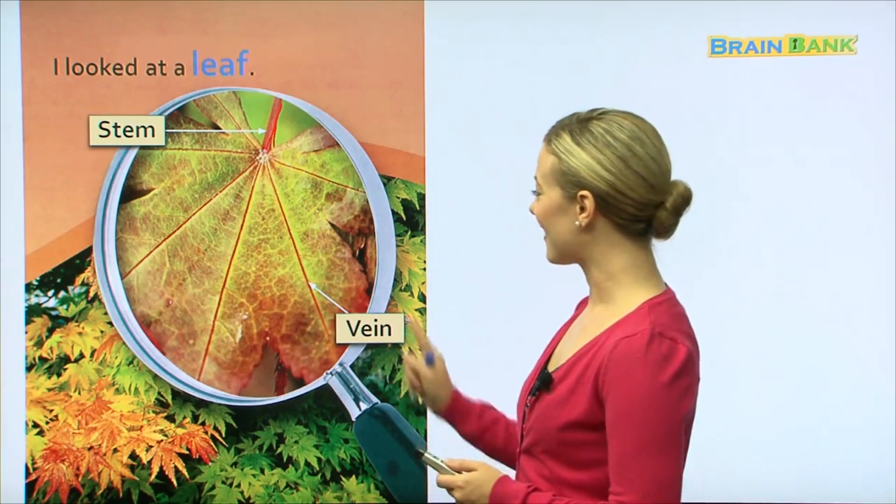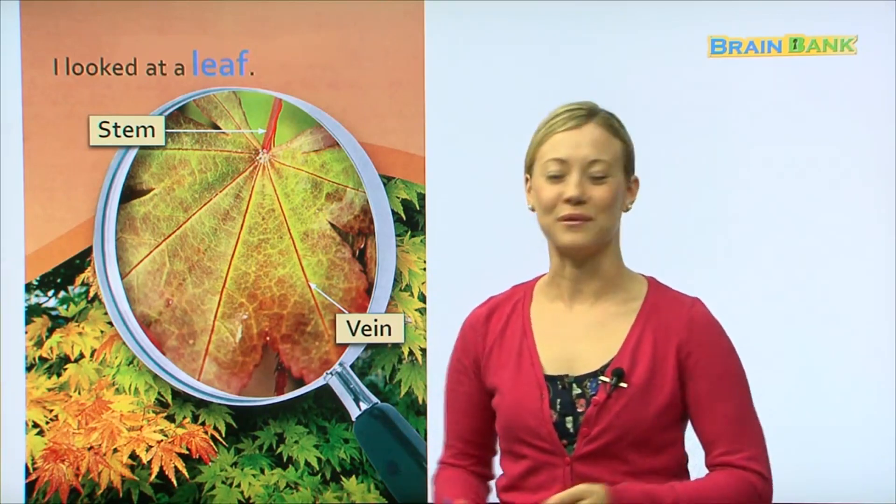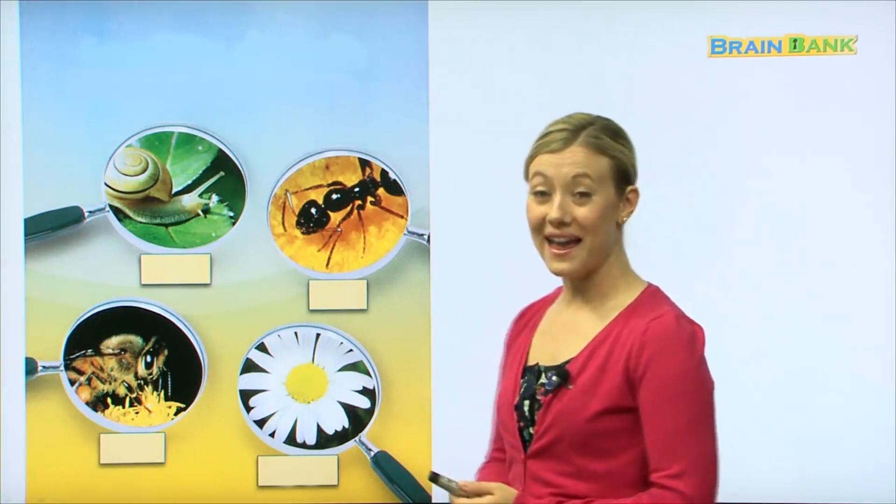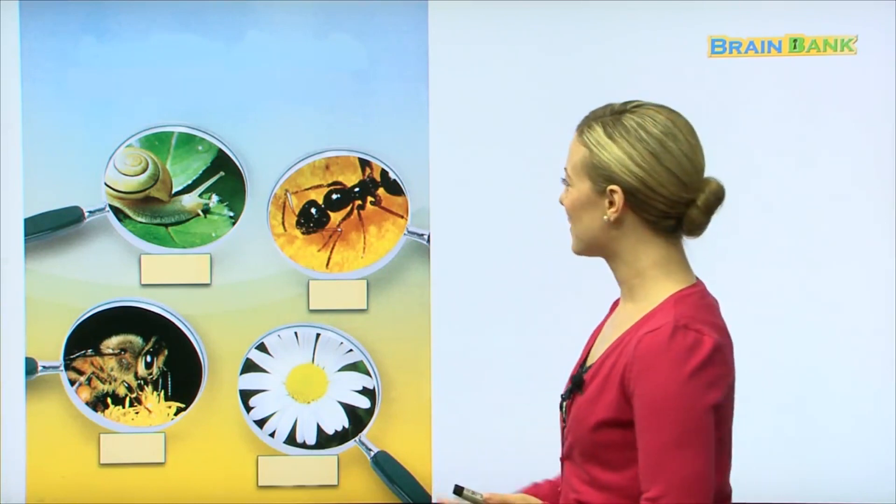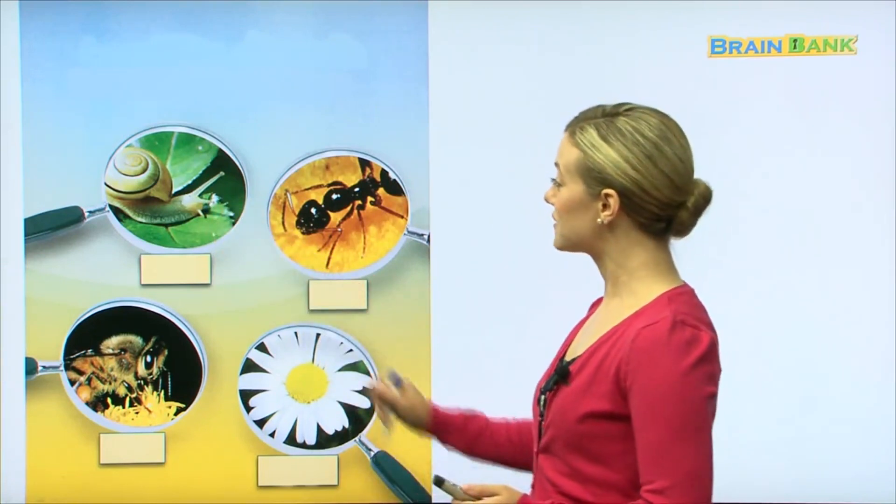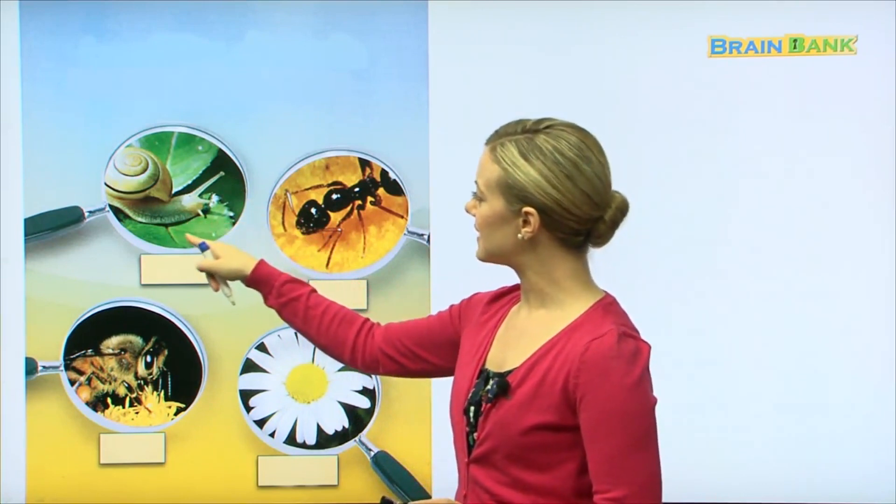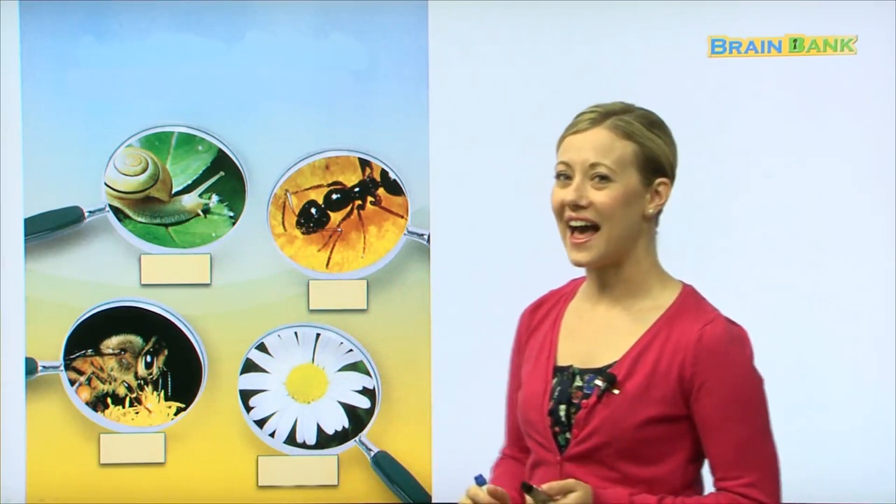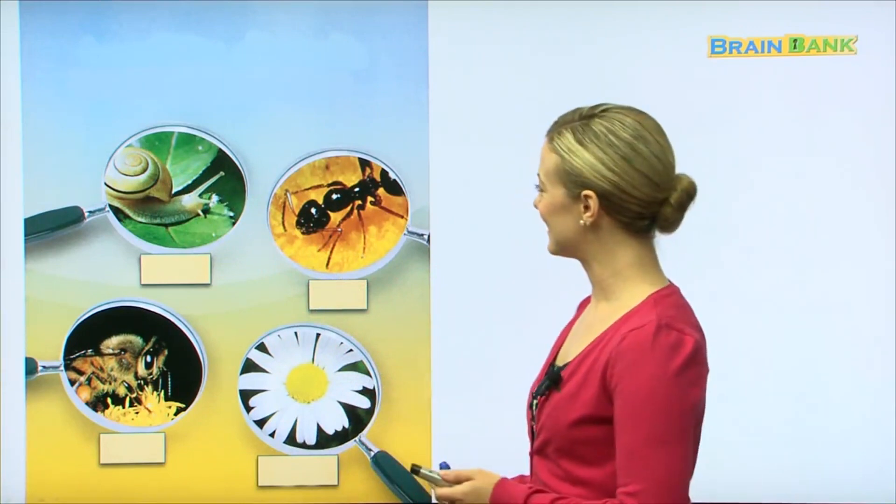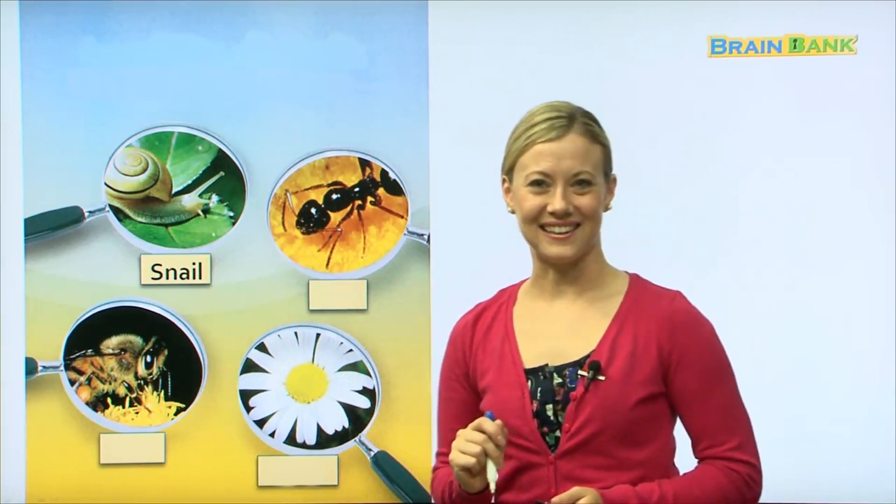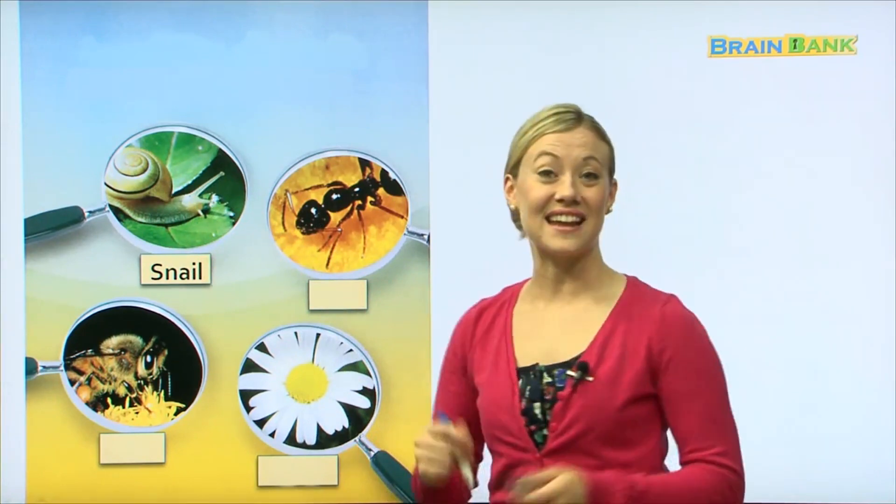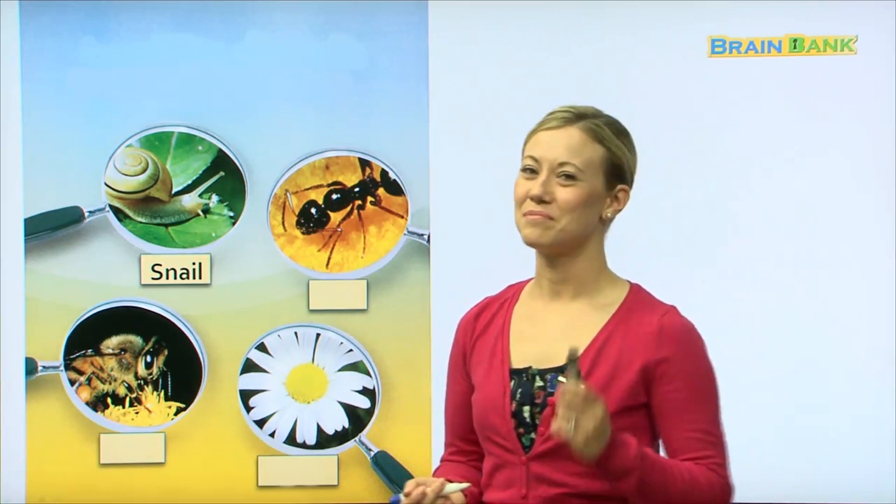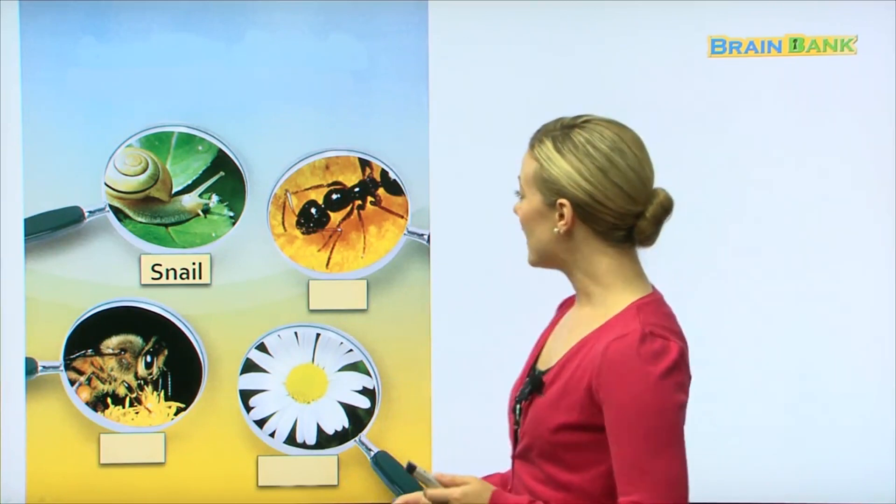Here we have four more things that we can see with a magnifying glass. So let's see if we know what they are. Okay, so what do we have here? It looks like an insect that's sitting on a leaf with a shell on its back. What animal is that, or what insect is that? A snail. Very good. Can we all say snail? Snail, snail, excellent.